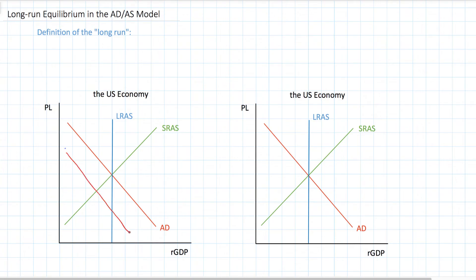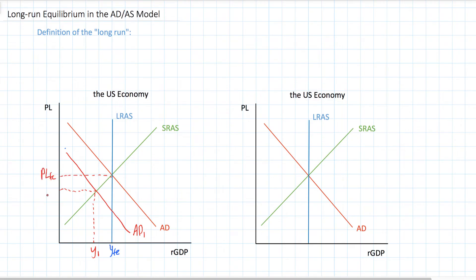When aggregate demand decreases, as we see in our graph on the left, a fall in aggregate demand — also known as a negative demand shock — causes a short-run decrease in the equilibrium level of output from YFE, full employment national output, to Y1, and a decrease in the equilibrium price level from PLF, the full employment price level, to PL1. This decrease in output and the price level is the result of sticky or inflexible wages in the short-run.